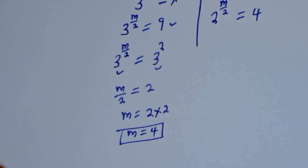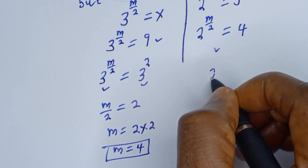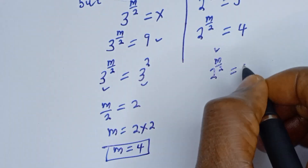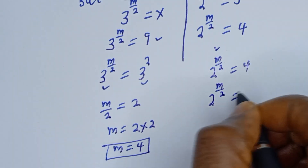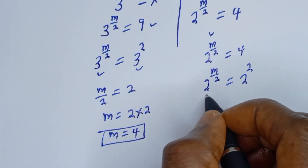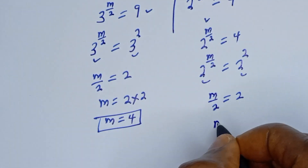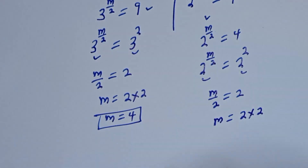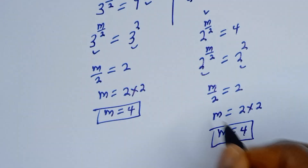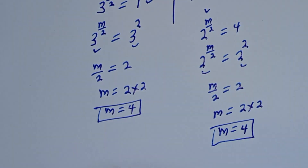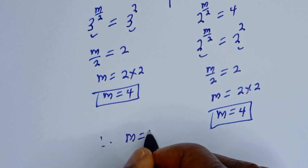For the second equation: 2 to the power of m over 2 is equal to 4. Since 4 is 2 squared, m over 2 is equal to 2, so m is equal to 2 multiplied by 2, giving m equal to 4. This is also the value of m. Therefore our final answer is m is equal to 4.